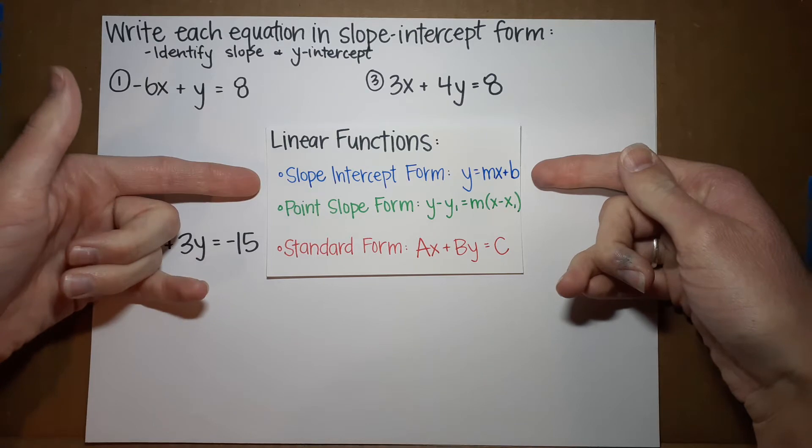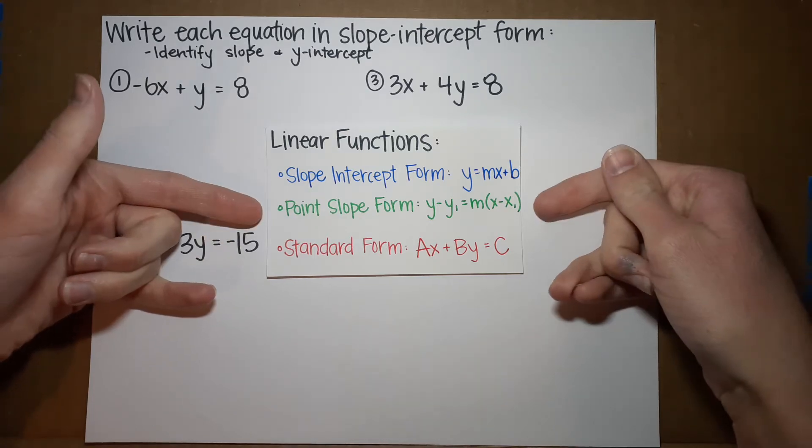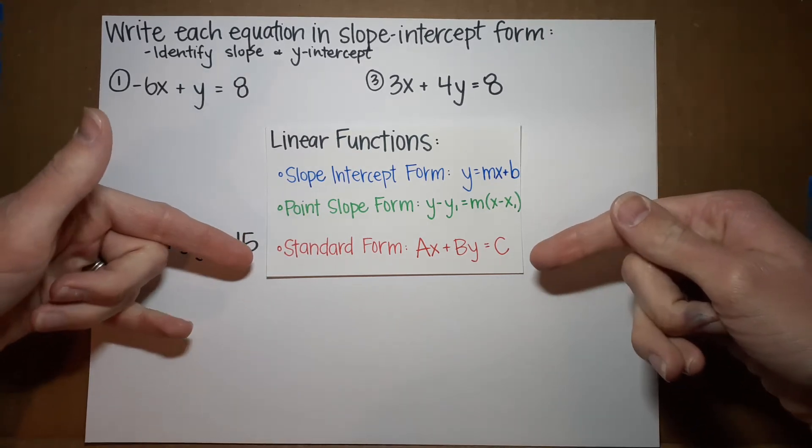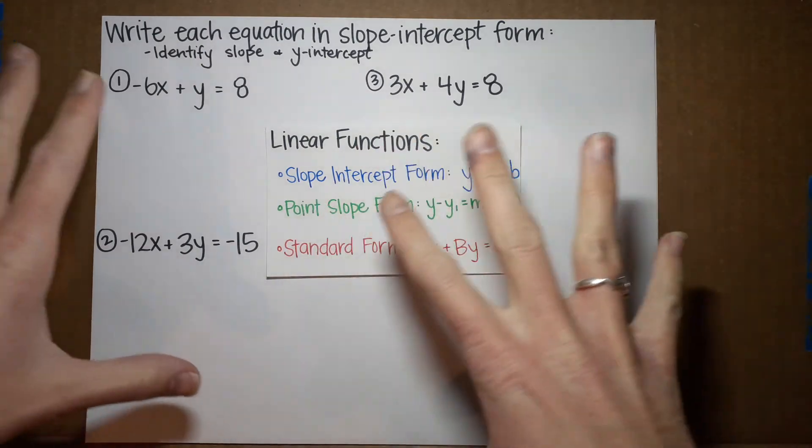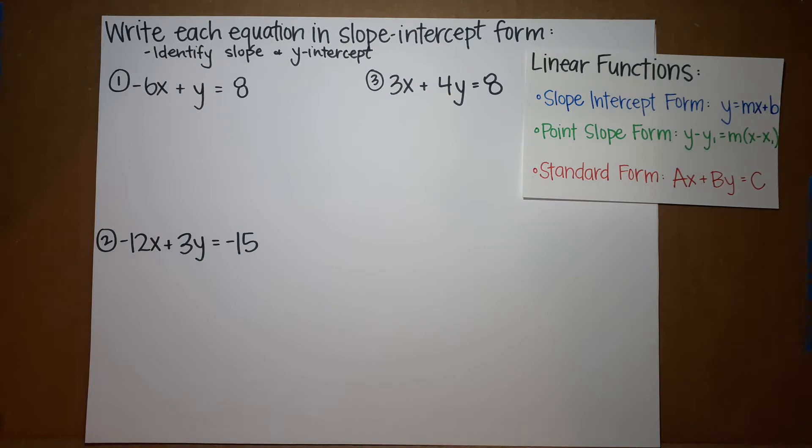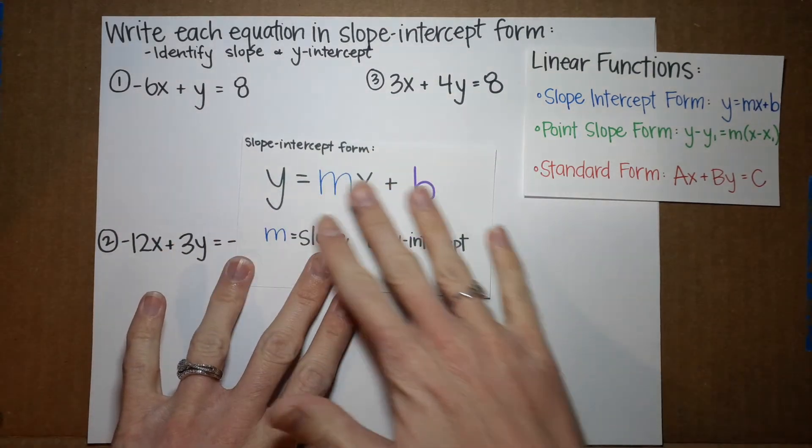There's three ways you'll typically see these written. First is slope-intercept form, my personal favorite. I hope it will become your favorite as well. Point-slope form, don't need to worry about that one right now, you will later. And standard form. These are all currently in standard form and we're going to convert them to slope-intercept form.